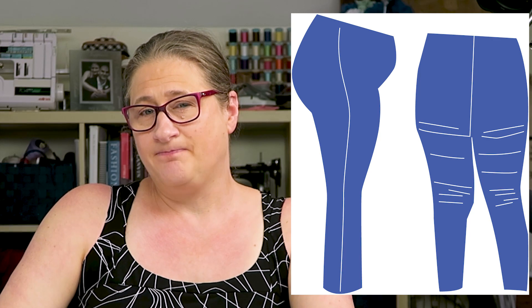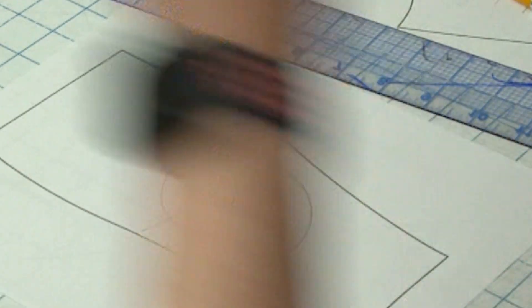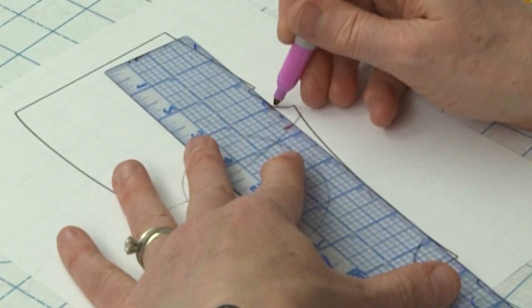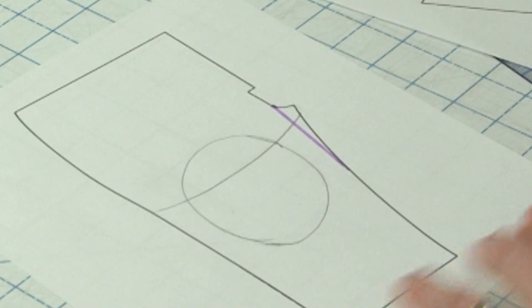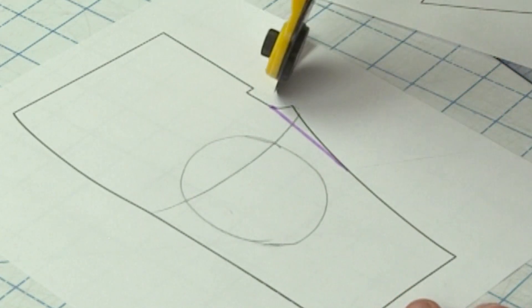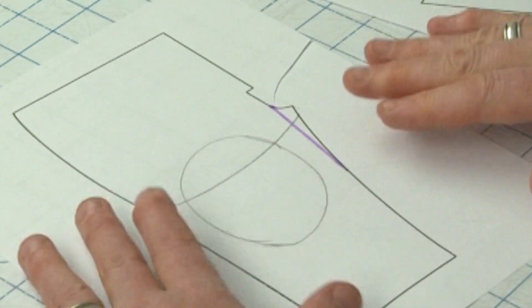So the way you can fix this is to create more ease for your prominent front thigh and one way to do that, I'm just going to use pink sharpie here. One way that you can create more room in that area is to make a guideline from the crotch curve in the front to the inseam and then what I'm going to do here is I'm going to slash that and I'm going to pivot that out a little bit.